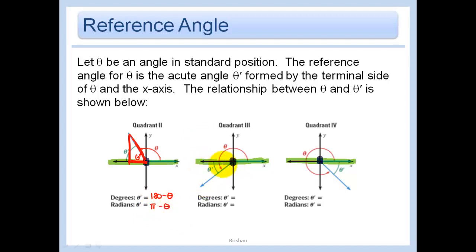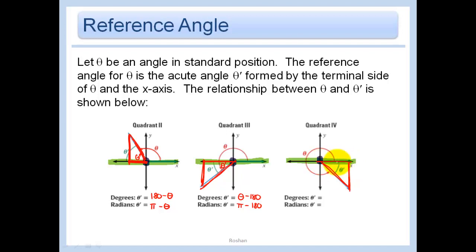If my triangle is in the third quadrant, I bring it back up to the x-axis. My angle is always the one touching the vertex, so this is my reference angle. To find it: I have the whole angle, and I subtract out the 180 (or π), so I'm left with just this piece. For a fourth-quadrant angle, it's 360 minus the angle — or 2π minus the angle — that gives me the reference angle.